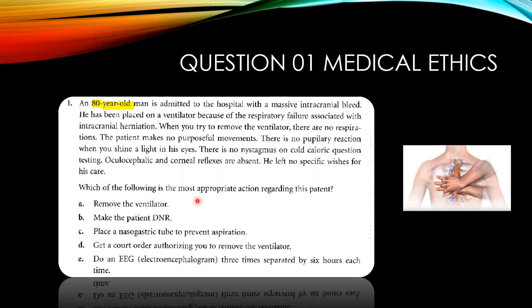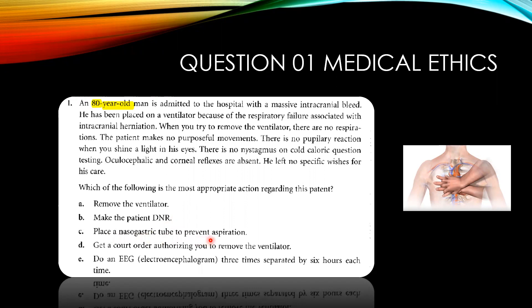With the above scenario, which of the following is the most appropriate action regarding this patient? Options are: A) Remove the ventilator; B) Make the patient DNR; C) Place a nasogastric tube to prevent aspiration; D) Get a court order to remove the ventilator; E) Do an EEG. You have 10 seconds to think about this question, then we will show you the answer.